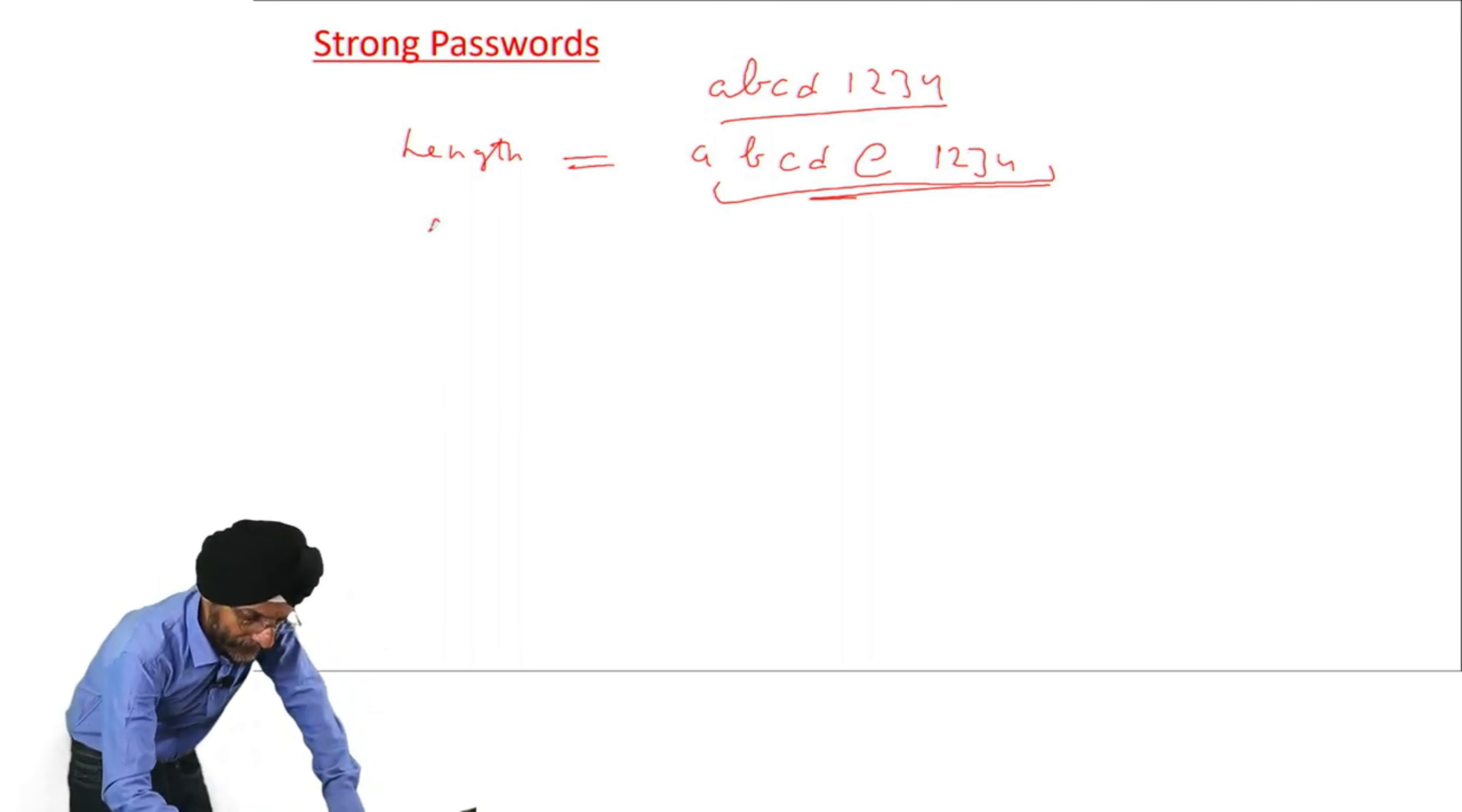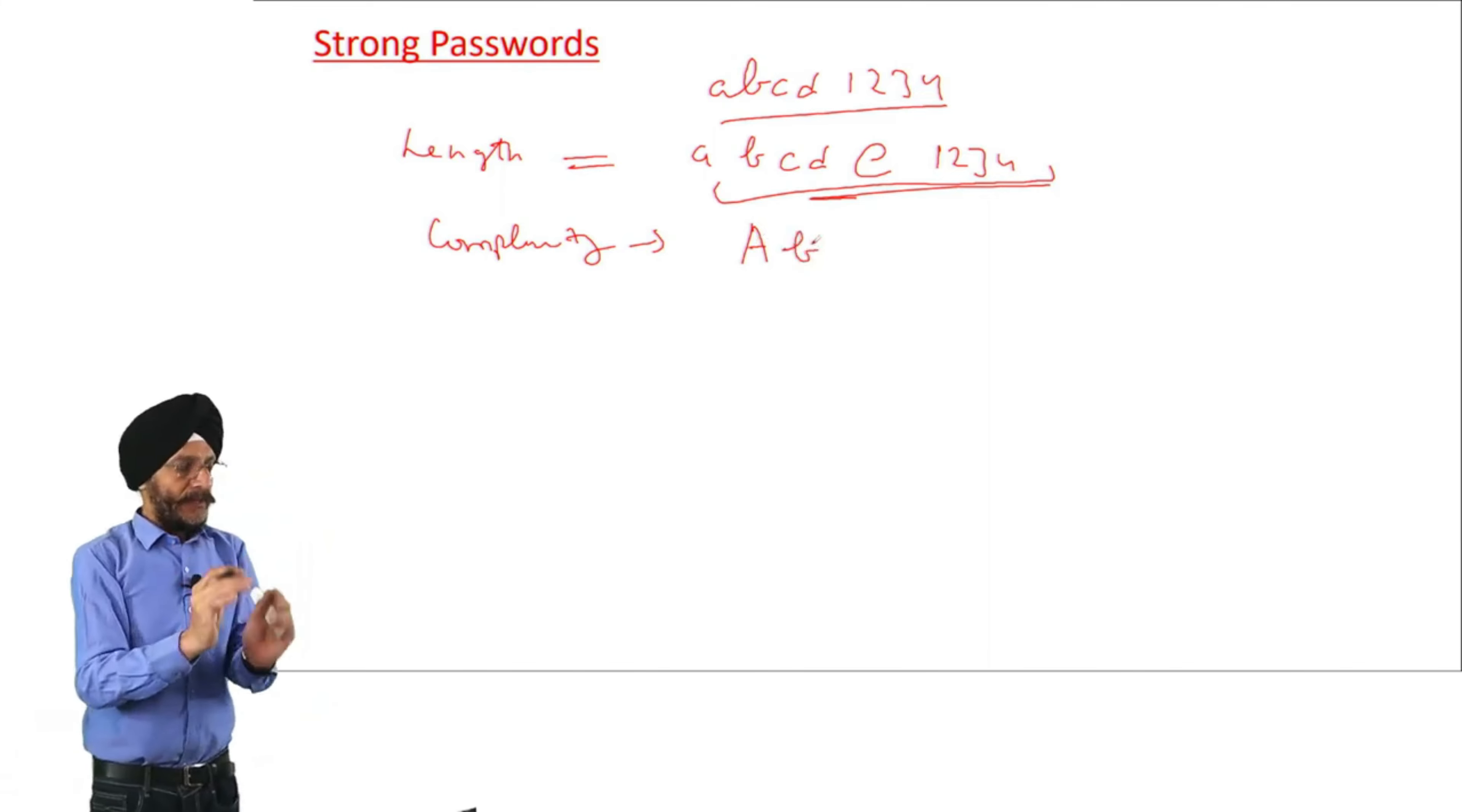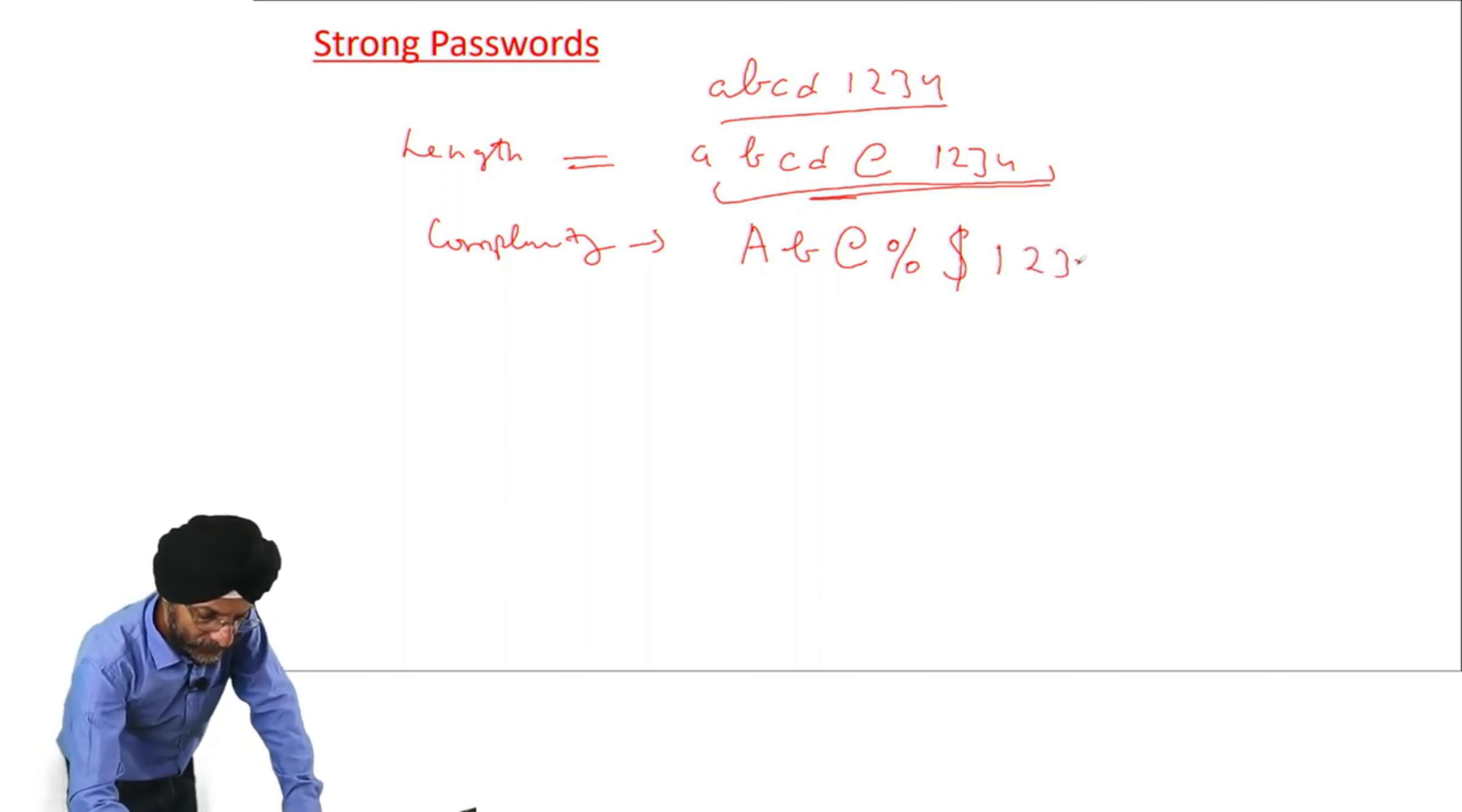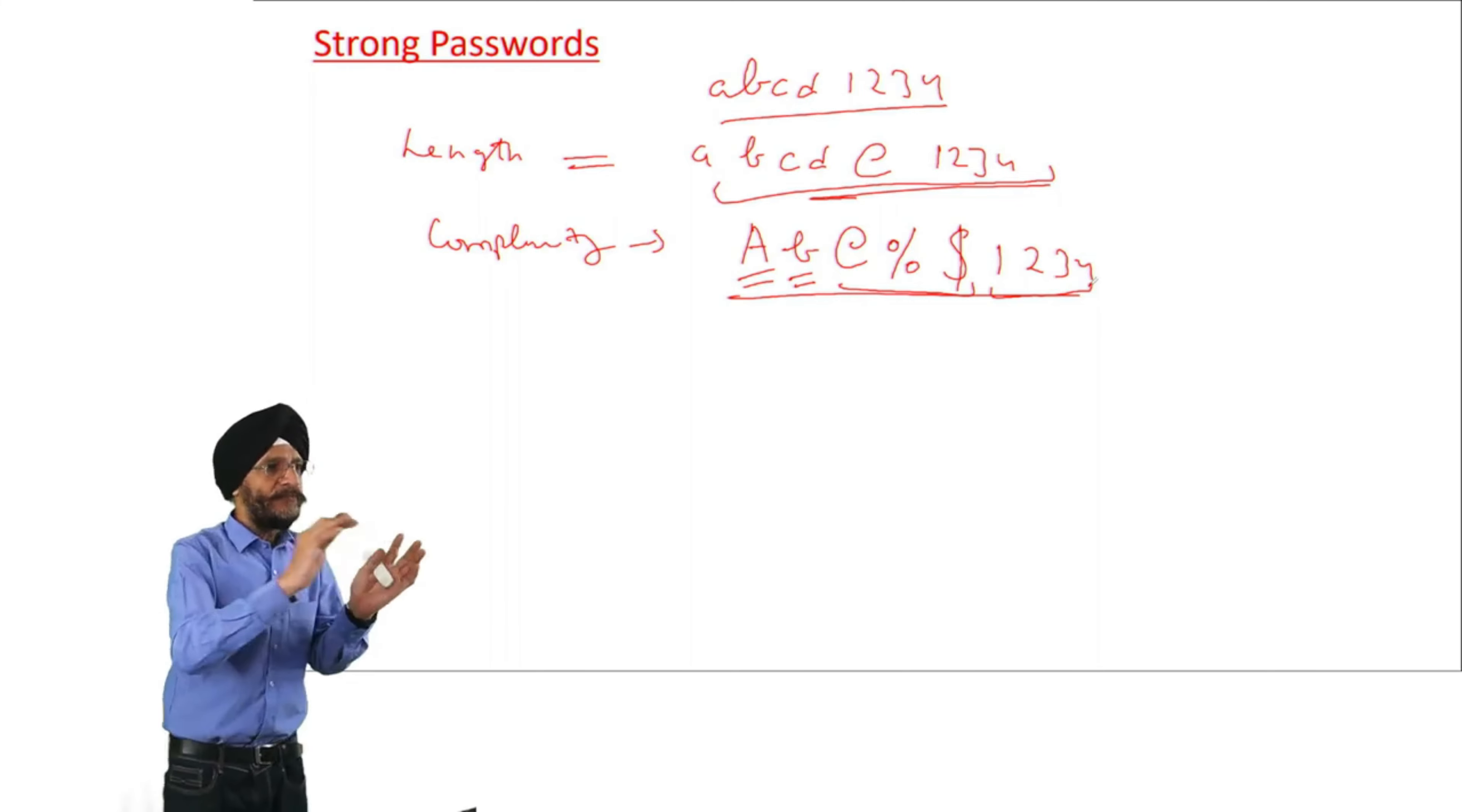Then we can make it complex. How we can make it complex? We can keep it complex by writing it in upper words, upper characters. We can also use simple, normal characters. Then we can use special symbols, these types of symbols, and then we have to also use numerical. So, in this way we can make the password strong. Here this is the upper case, this is the lower case, these are the special characters and these are the numbers.